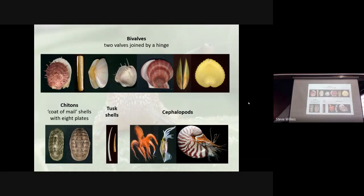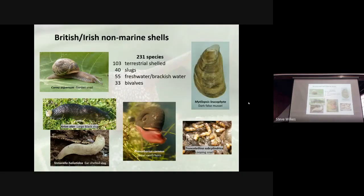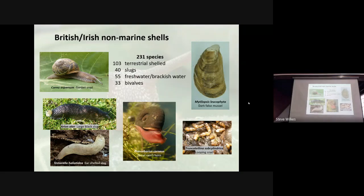I'm not going to talk about those, except with one or two references, but for British non-marine shells — which is what I'm interested in — land and freshwater shells — we at the moment have 231 species, although that is increasing every now and then as imports and introductions come in. That's 103 with shells, 40 slugs, 55 freshwater or brackish water ones, and 33 bivalves, only in freshwater.